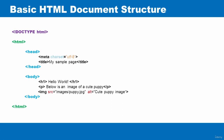Next we have the body element, which contains the visual content of the page. The actual content you can see when you visit a website is the content wrapped between the opening and closing body tags — anything between them is the visible content displayed on the web page. It contains all the content you want to show to the web user, whether that is text, images, videos, games, or playable audio tracks.